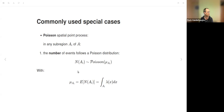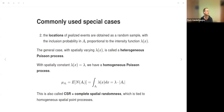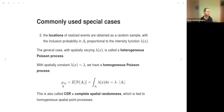The number of events follows a Poisson distribution, and the locations of realized events are obtained as a spatial random sample with inclusion probability proportional to the intensity function λ(x). In areas with higher intensity, there is a higher inclusion probability. The general case with spatially varying λ(x) is called a heterogeneous Poisson process.